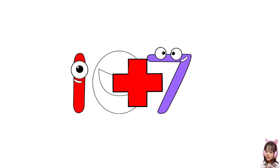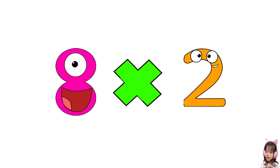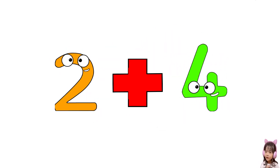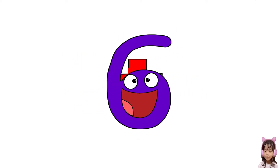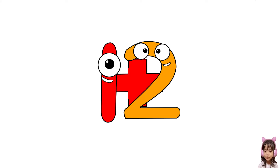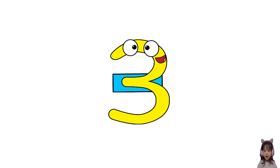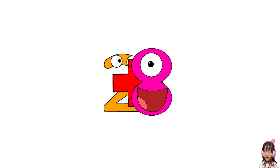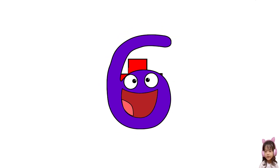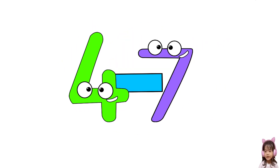Ten plus seven equals seventeen. Eight times two equals sixteen. Two plus four equals twelve. Eight minus five equals three. Two plus eight equals four. Four equals six. Two minus six equals forty-seven. Four times three equals twelve. Eight plus five equals eight.